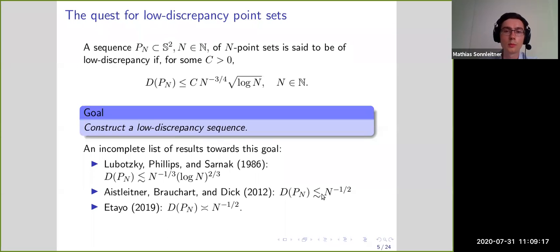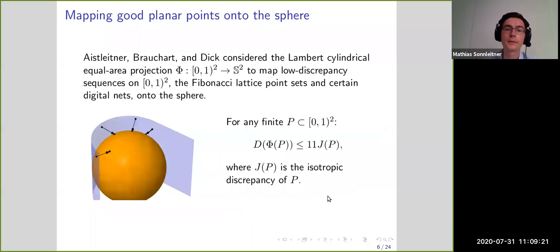A result by Etayo showed that the diamond or zonal construction, based on points distributed on great circles parallel to the equator, has discrepancy n to the minus 1/2. I now want to go into detail about the second approach and describe the mapping and how they achieved this rate.